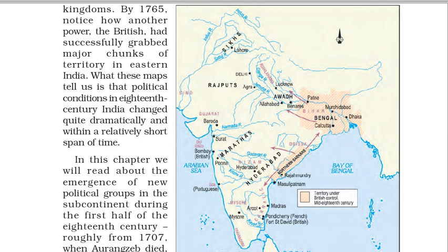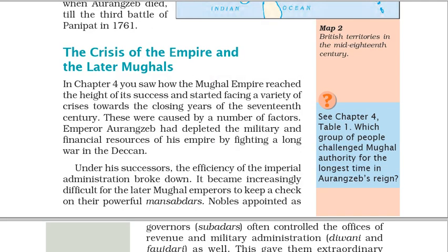In this chapter we will read about the emergence of new political groups in the subcontinent during the first half of the 18th century, roughly from 1707 when Aurangzeb died till the Third Battle of Panipat in 1761.